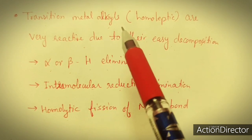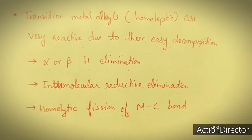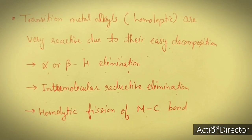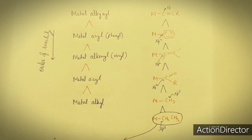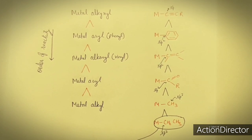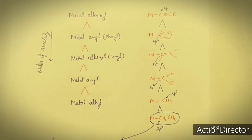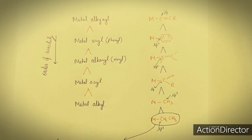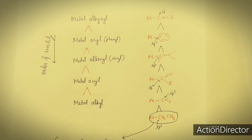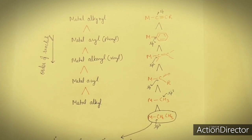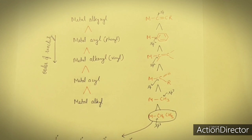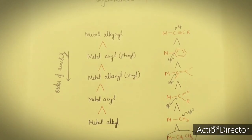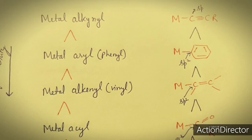Transition metal alkyls, if they have homoleptic type ligands, become very reactive. This is the reactivity order of transition metal organometallic compounds — you can take a screenshot of this order. I will now explain why this order exists. The reactivity of transition metal complexes increases across this order.